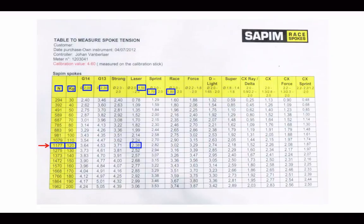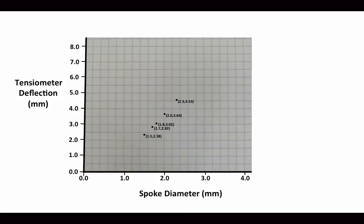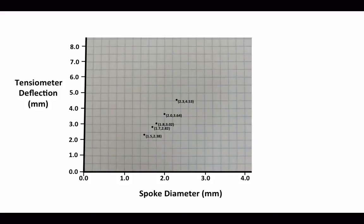And for those same five diameters, if I look at the deflection I will get with 120 kilograms of force, this is the reading for the 1.5, the 1.7, the 1.8, the 2, and the 2.3. Those combinations give me five plot points on the graph with the coordinates in parentheses. I can connect those five dots with a line and any point on that line represents a combination of thickness and deflection representing 1177 newtons or 120 kilograms of force.